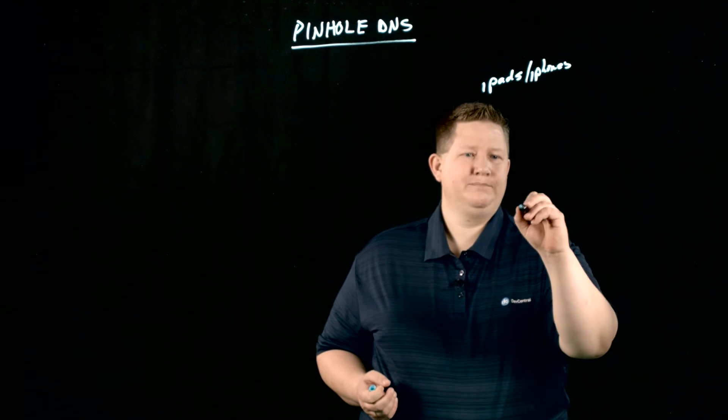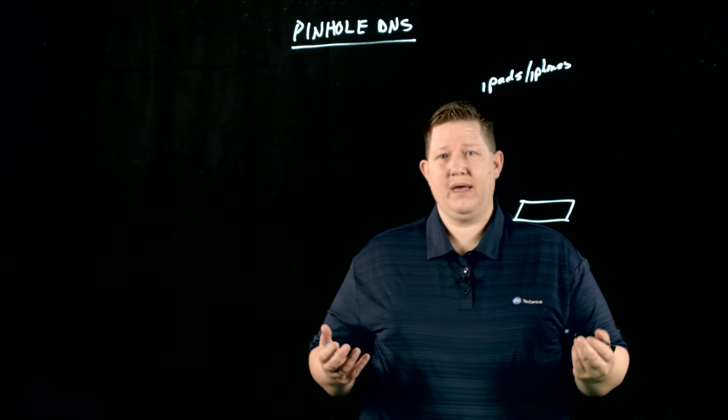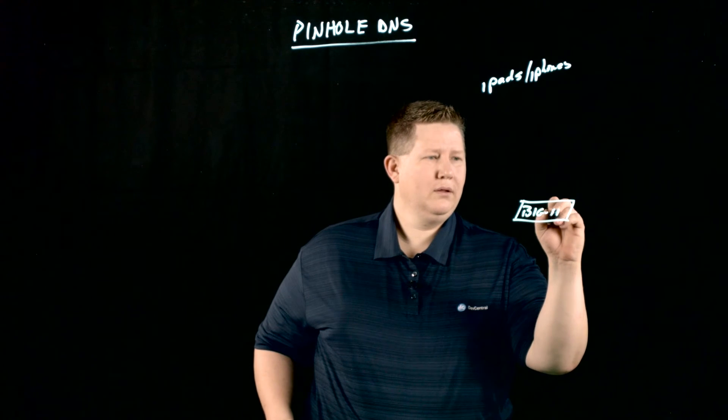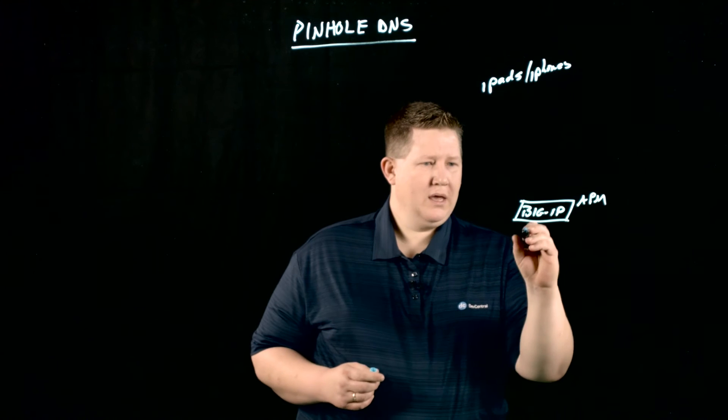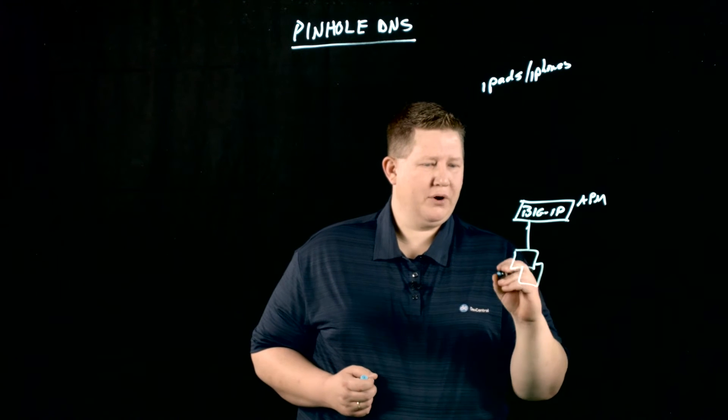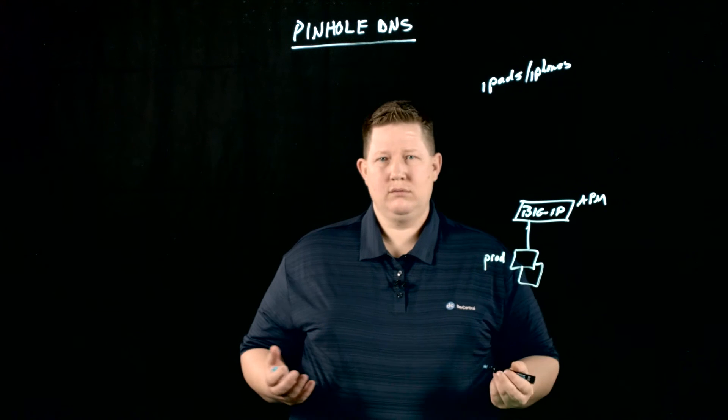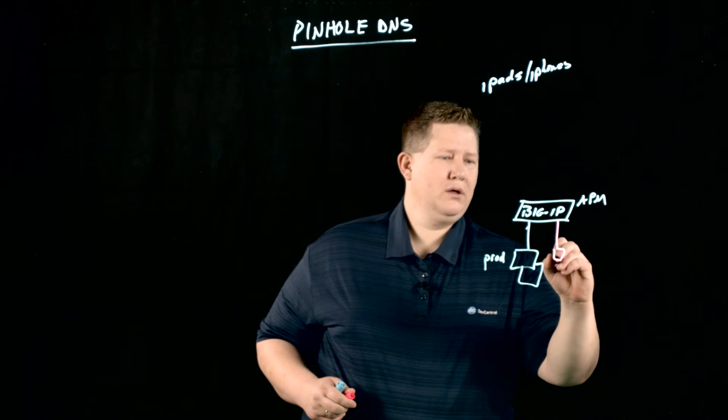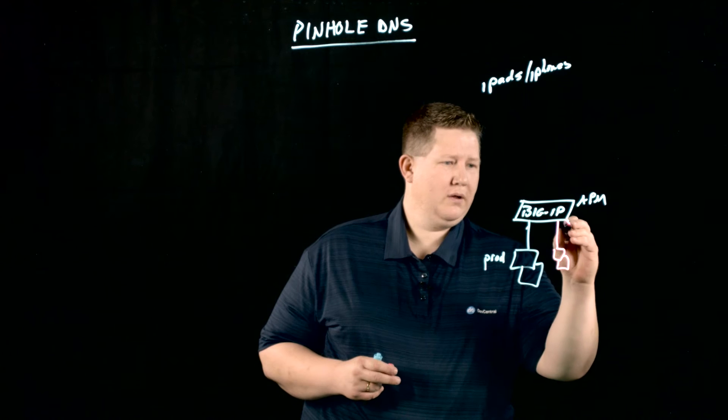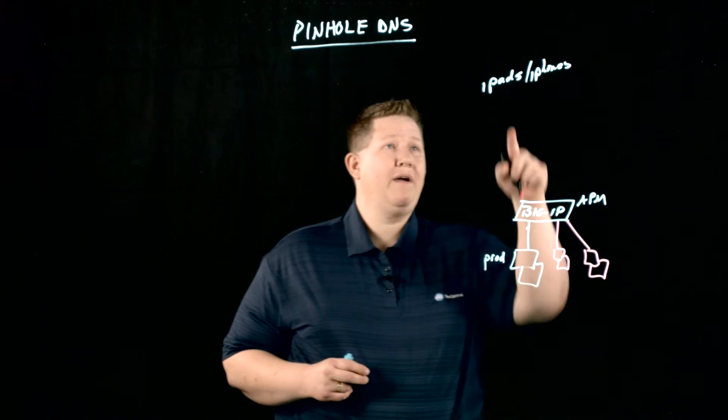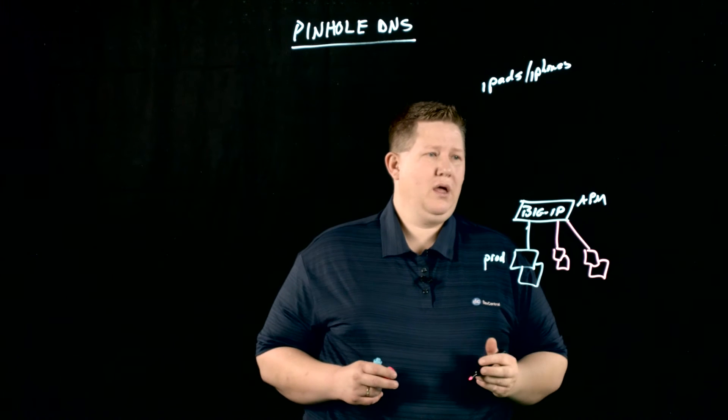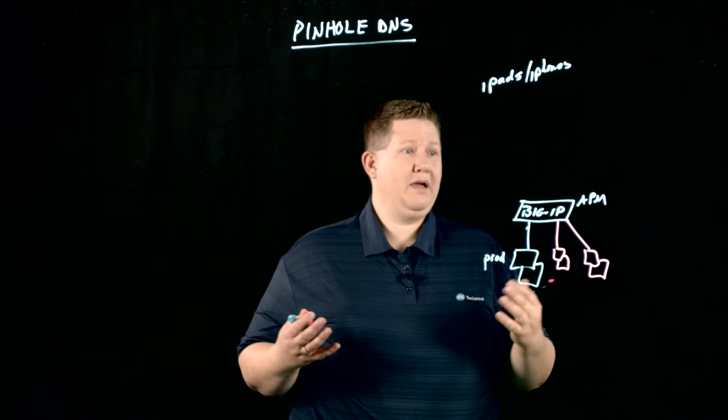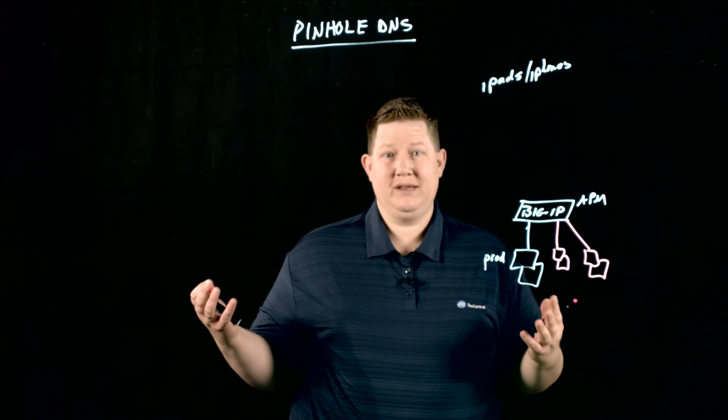In our use case, when I managed the DevCentral environment, we had a big IP with APM on it. In the back of that we had our production DevCentral website, then we also had our staging servers and then we also had our test servers. If I wanted these resources to be able to get to those assets, how am I going to solve that? Because these iPads and iPhones are going to use whatever DNS servers they have.